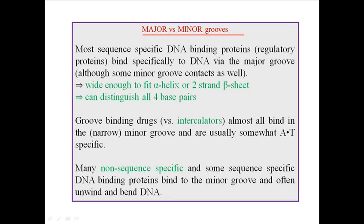Some drugs can bind with the minor groove region because in those diseases the main goal is to block the DNA from multiplying. We need to add drugs that can attach to any site, irrespective of sequence regulation or sequence specificity. If we make a drug that binds with a particular sequence, it needs to find that sequence which takes time and may fail. That is why we design drugs that can attack any part of the DNA — binding the minor groove rather than the major groove. Non-sequence-specific proteins like histones can also bind to the minor groove.